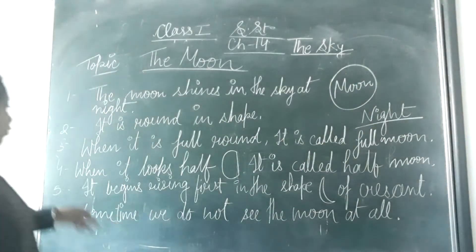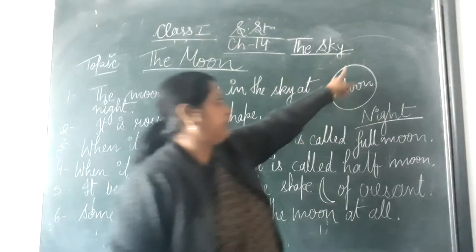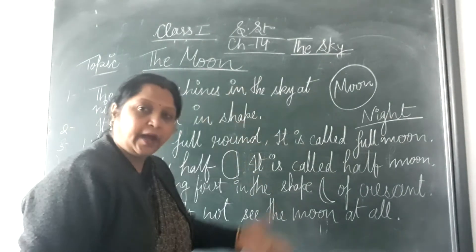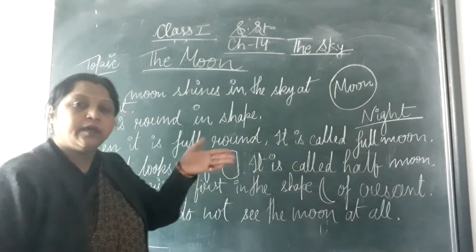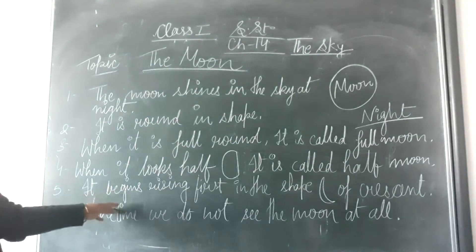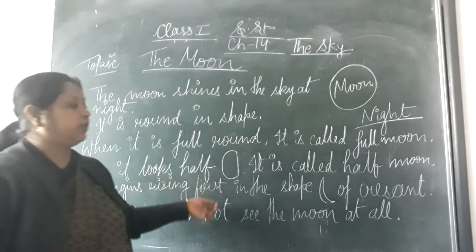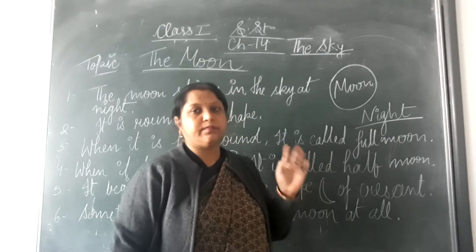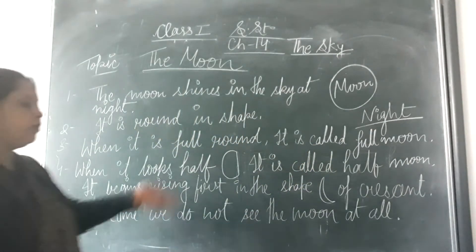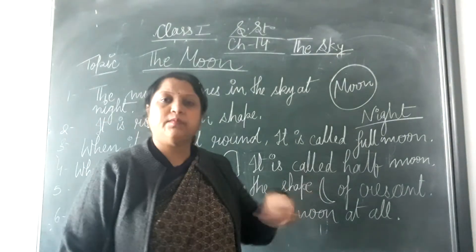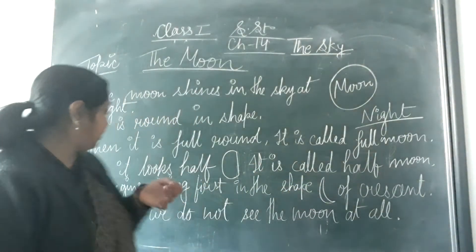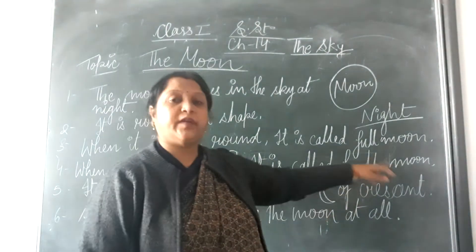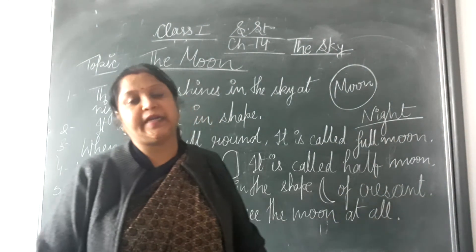Aur jab aapko half mein dikhega, it looks half — aadha. It is called half moon. Iskoon kya kehenge? Half moon. And it begins rising first in a crescent shape. Kabhi kabhi amko moon bilkul nahi dikhta hai. Sometimes we do not see the moon at all. Then it begins rising first in a crescent shape.